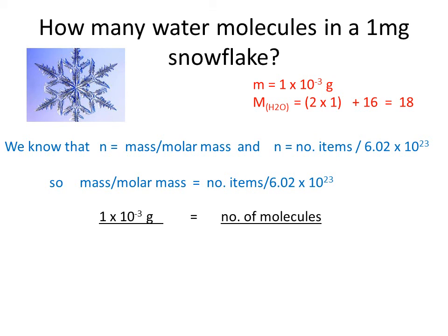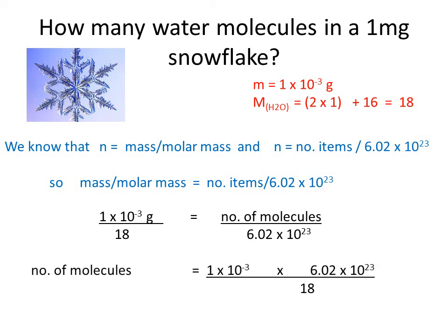So, manipulating that, we have our mass, which is ten to the minus three divided by the molar mass, eighteen. Number of molecules is what we want to find out, and six by ten to the twenty-three is our Avogadro's number. Changing this around, and working out the calculation, we get the number of molecules is equal to three point three by ten to the nineteen.